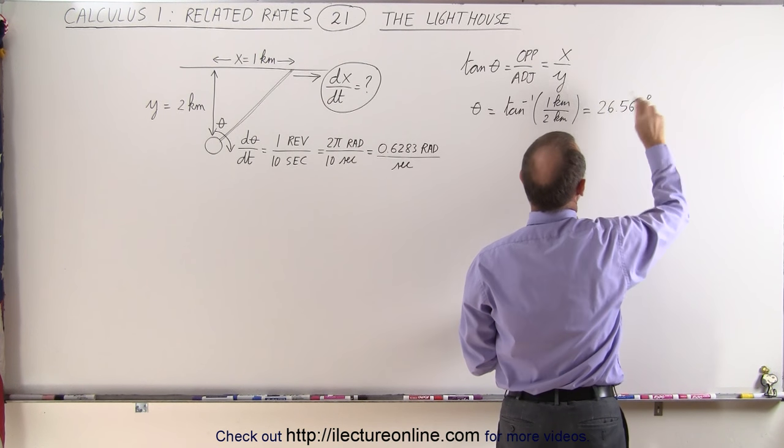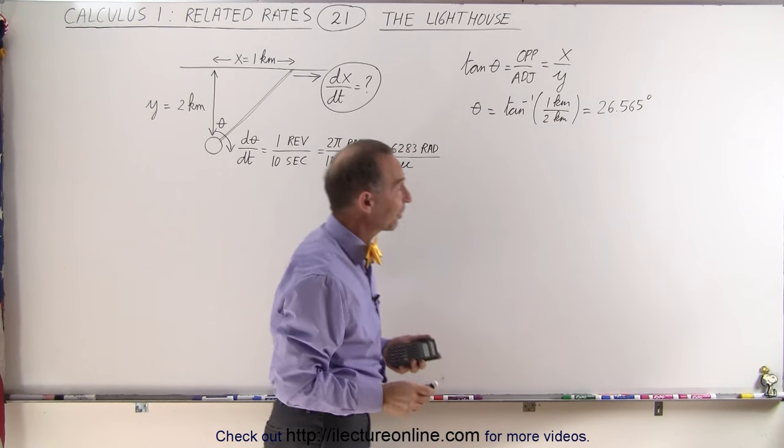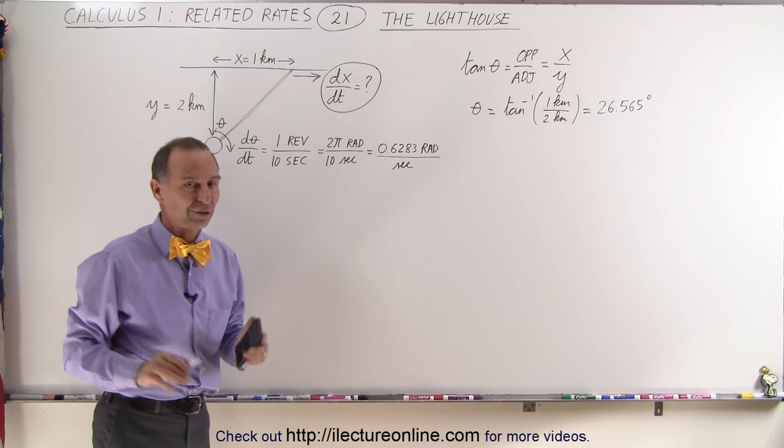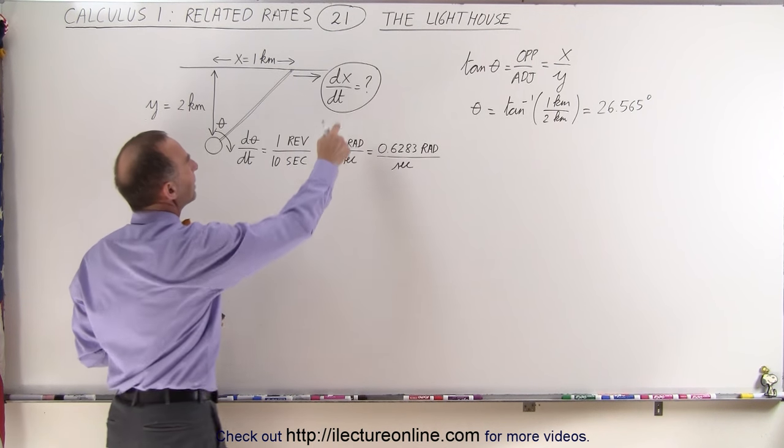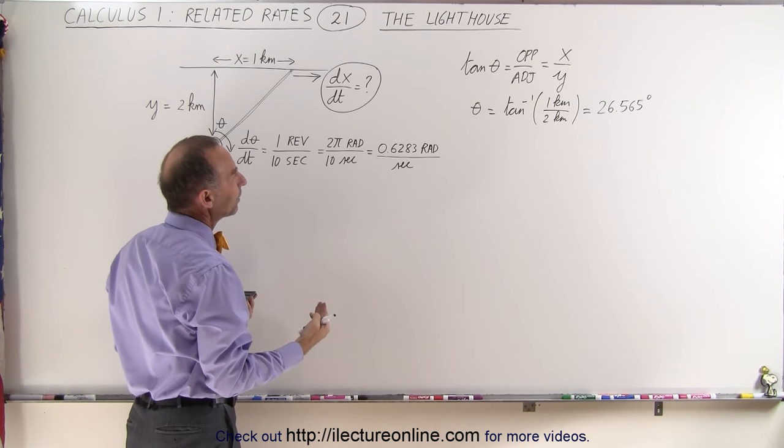26.565 degrees. I'm keeping a few extra significant figures—they're not really that significant, I just don't want a rounding error. So next, what we need to do is find dx/dt. How do we do that?